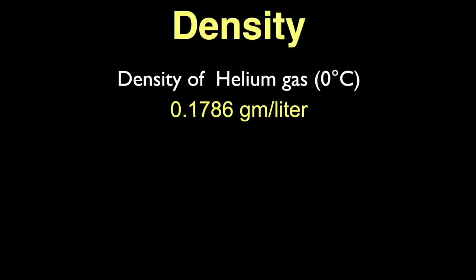As a gas, helium is the second least dense element at 0.1786 grams per liter of gas at zero degrees Celsius. Only hydrogen is less dense. Most of the time, we give densities in grams per cubic centimeter, but for gases, we'll use grams per liter.